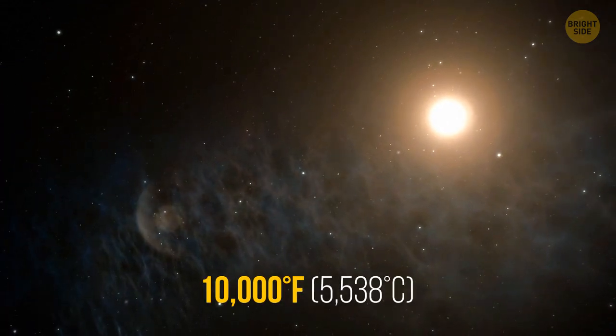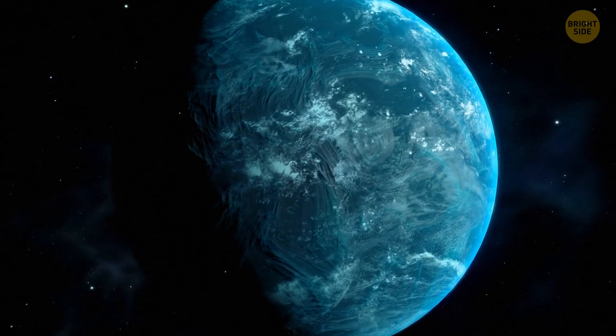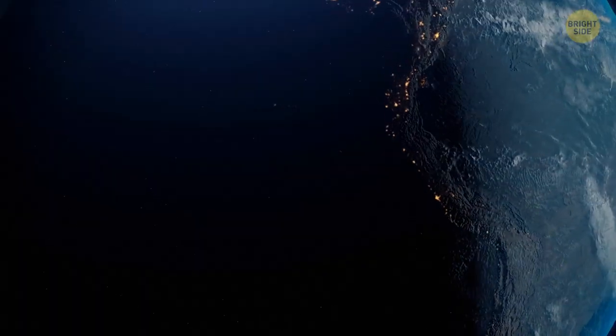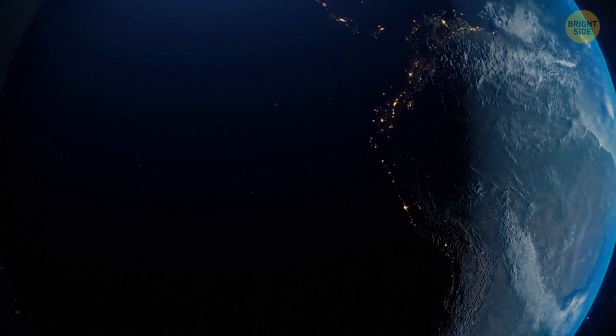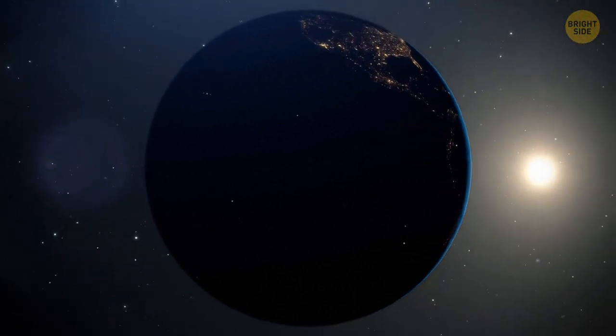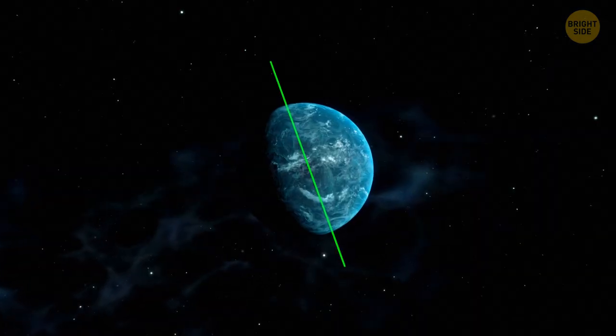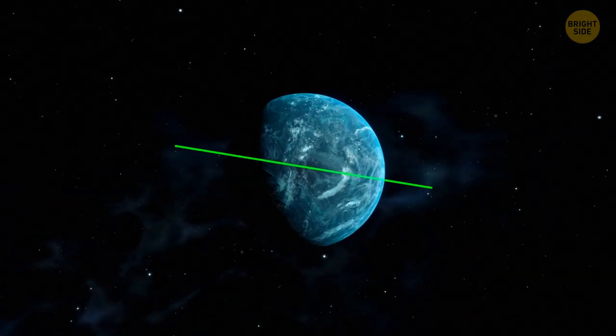Just some 10,000 degrees Fahrenheit. And that's why we can assume that the temperatures on Kepler-22b will be about the same as we have on Earth. If the planet orbits its star the same way Earth orbits the Sun, which we don't actually know.